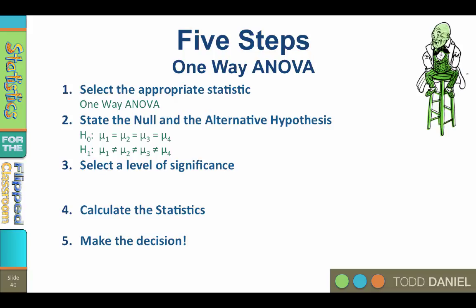Step three, select a level of significance. We will use our typical alpha of 0.05, but we don't really need to state one tail or two tail at this point because in a sense ANOVA is always one tail because the F distribution has only one tail.